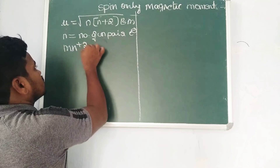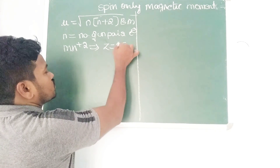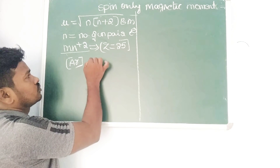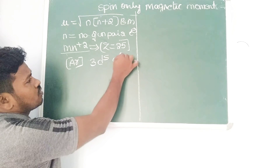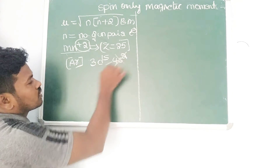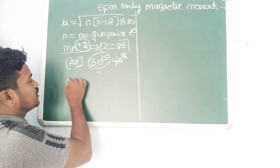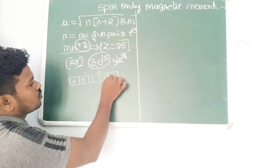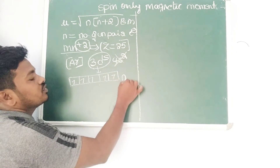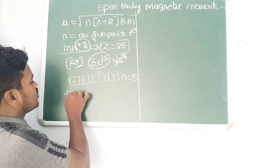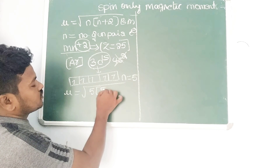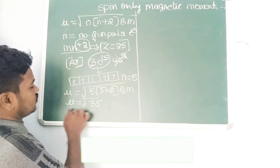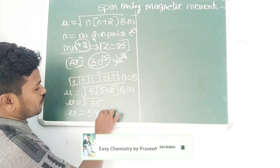For example, Mn²⁺ — manganese has atomic number 25. The electronic configuration is [Ar] 3d⁵ 4s². Since they are asking for Mn²⁺, we remove two electrons, giving [Ar] 3d⁵. There are five unpaired electrons, so n = 5. Substituting: mu = root of 5(5+2) = root of 35, which gives 5.92 Bohr magnetons.